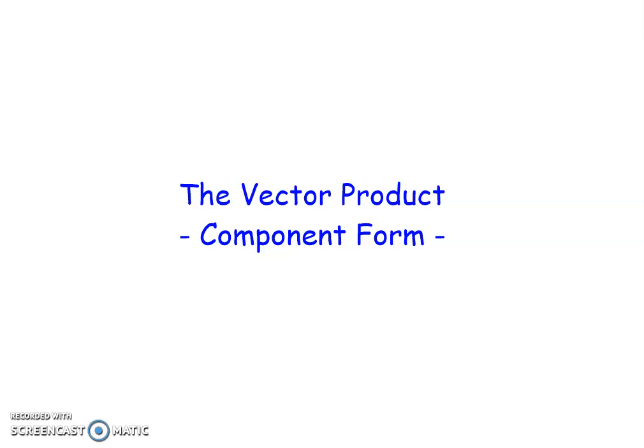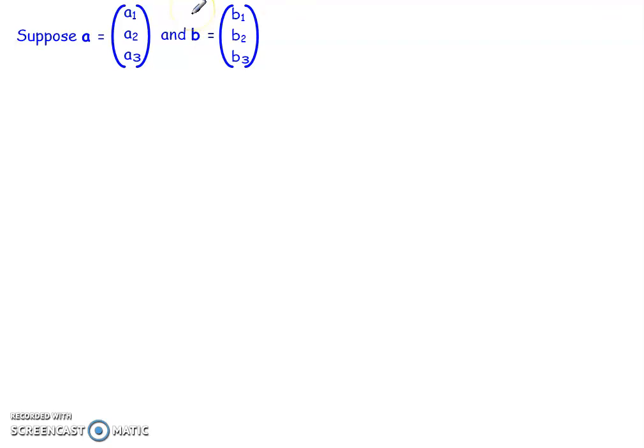And in order to do that I've actually physically got to look at how do I combine these two vectors and multiply them together. So let's just take two generic vectors a being a1 a2 a3 and b being b1 b2 and b3 and let's do a vector product a cross b.